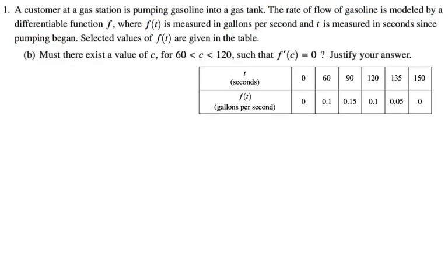Let's take a look at B. Must there exist a value of C between 60 and 120 such that F prime of C equals 0? Justify your answer. So we have a table for F of T. We're being asked about F prime. This is going to be mean value theorem.